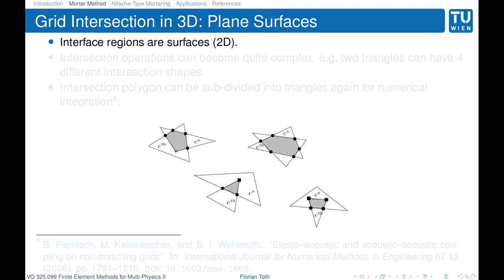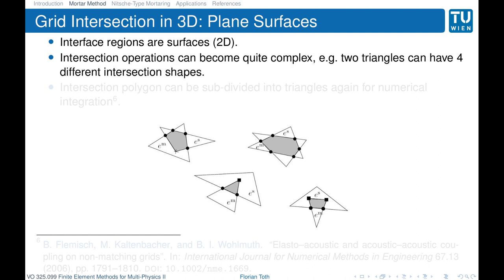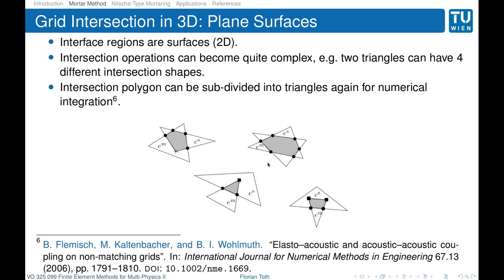When we go to 3D and consider only plane surfaces — a seemingly easy case — the intersection operations of two triangles already produce four different intersection shapes. These range from a triangle to a quadrangle to a polygon with four, five, or six vertices. So intersection operations are rather challenging. The intersection polygon can be subdivided into triangles again for numerical implementation. A reference is provided for more detail on how this works in practice.